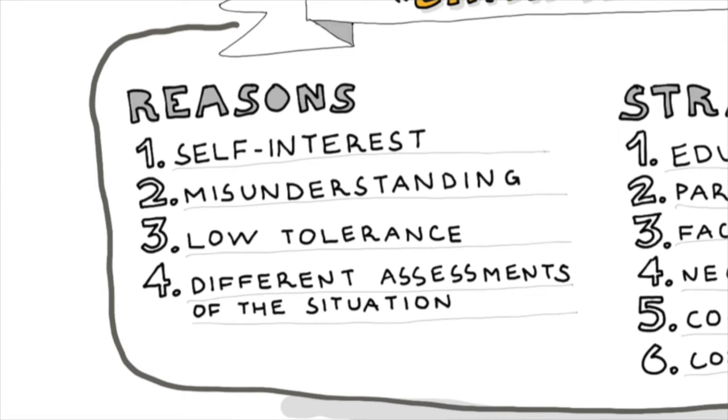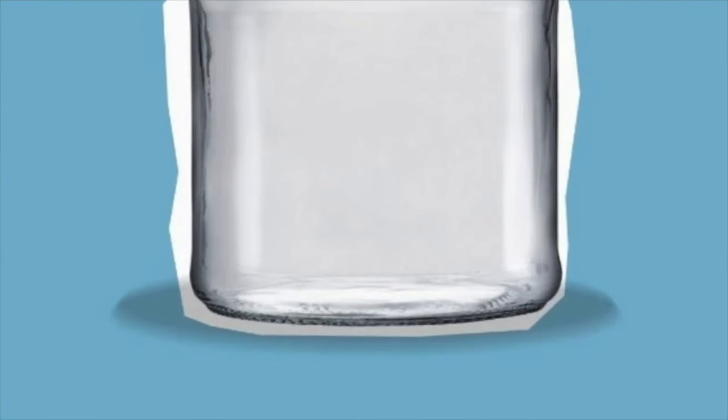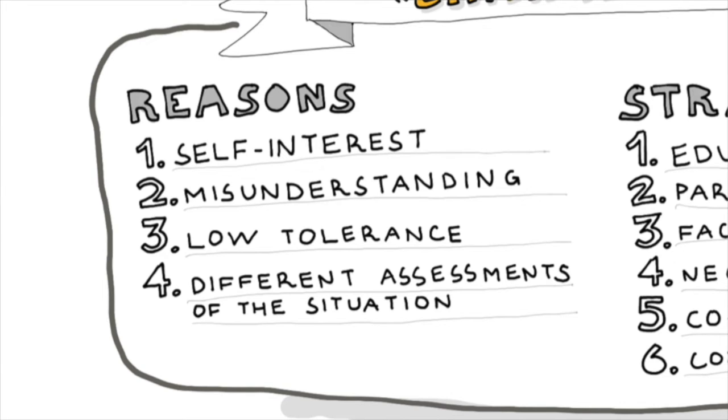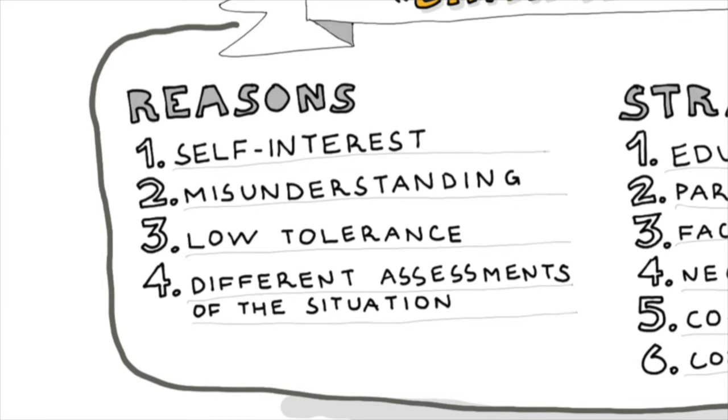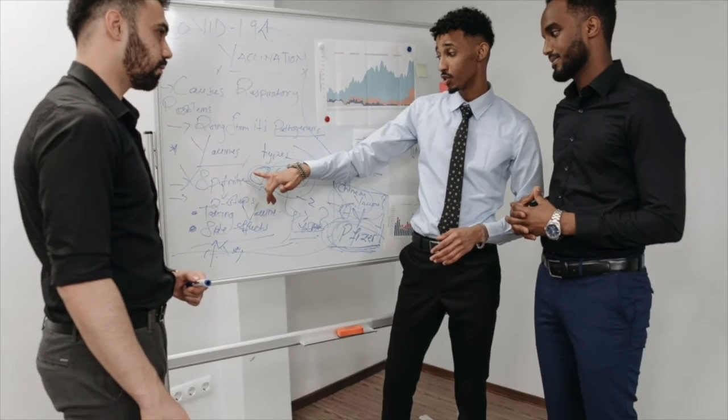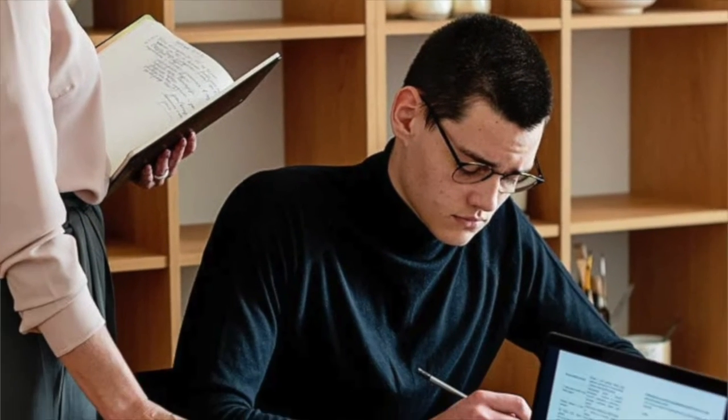The second reason is misunderstanding. Sometimes there are actually benefits to employees, but they are not explained correctly or are misunderstood by them. The third reason is low tolerance. Having to change means stopping doing things that are secure and safe, and some employees might not be able to bear with that well. The fourth reason is different assessments of the situation. Different people see the same thing from different perspectives — very often what the boss sees as an opportunity is perceived as a threat by employees.